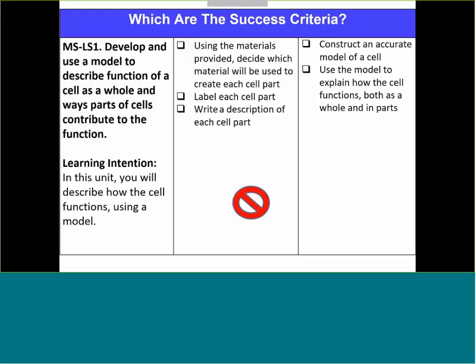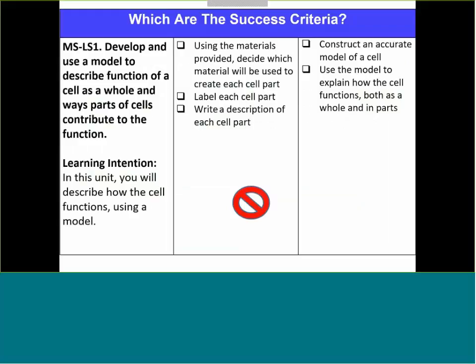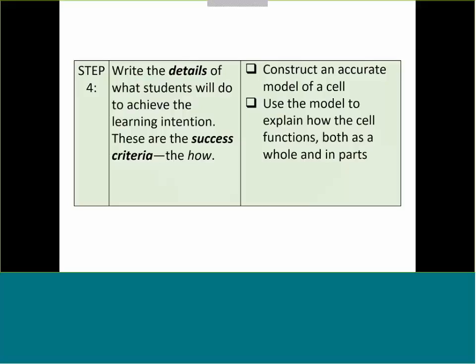Here's an example of that same one. In step four, we're going to write the details. You notice here there's only a couple of success criteria. Different progressions will have more success criteria and others will have fewer. But this is the more general one for the unit of study, in particular for this standard.